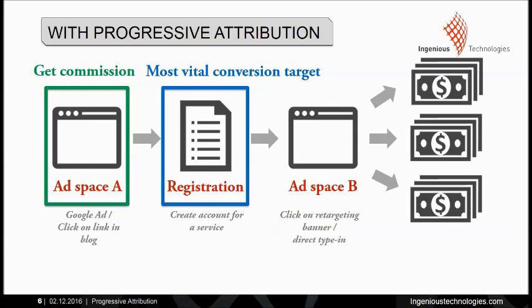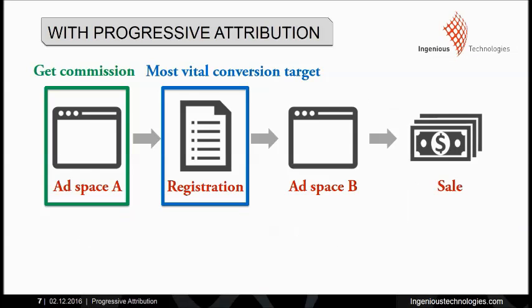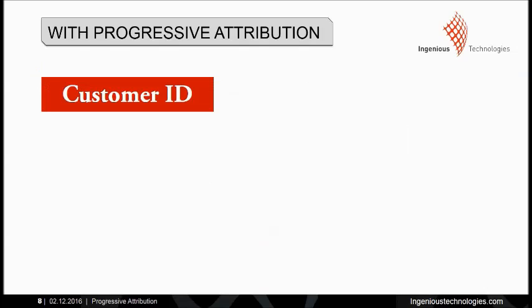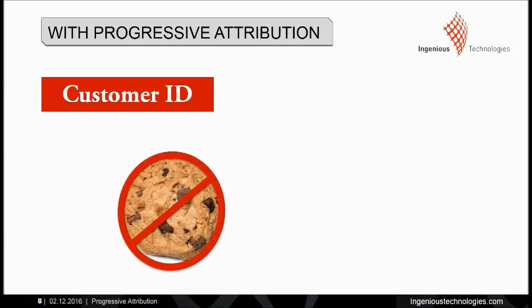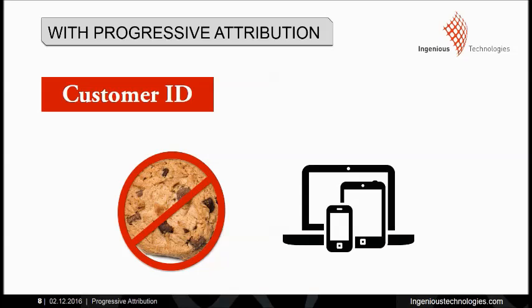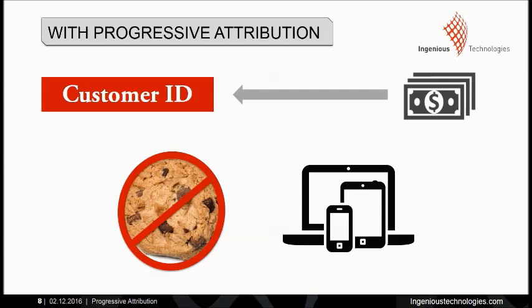One more important thing. For progressive attribution to work, it is vital that the customer ID is transmitted. With long customer journeys, customers might disable cookies. It is also likely that customers will register and purchase subscriptions on different devices. However, when the customer ID is transmitted, you do not need to bother about such media discontinuity. Sales will be attributed using the customer ID and lifetime value for adspace A is guaranteed.